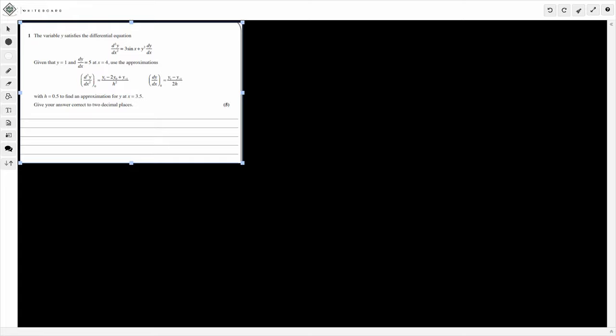And this is question 1. So question 1 takes a look at differential equations and using approximations to find certain values. This variable y satisfies this differential equation here. We're given some initial conditions when y is 1, dy by dx is 5 at x equals 4, and we have to use these approximations here. We've got an h value of 0.5 and we have to find the approximation for y at x equals 3.5.